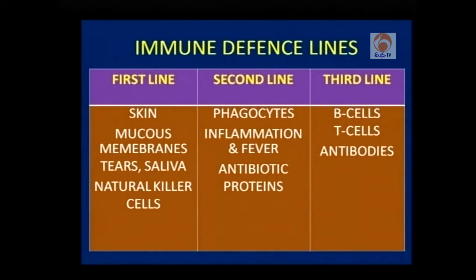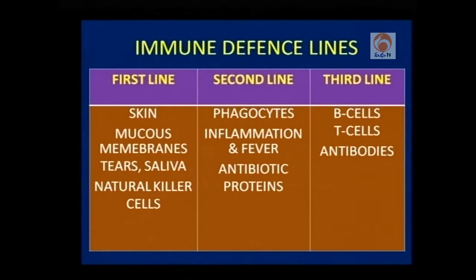The second line consists of phagocytes, inflammation, fever, and production of antibiotic proteins. If by chance a pathogen escapes the first line of defense, the second line comes into picture and a number of activities take place inside our body so that the infection is prevented and we are protected.